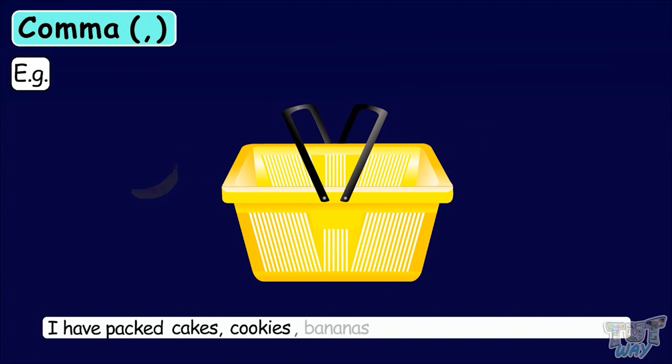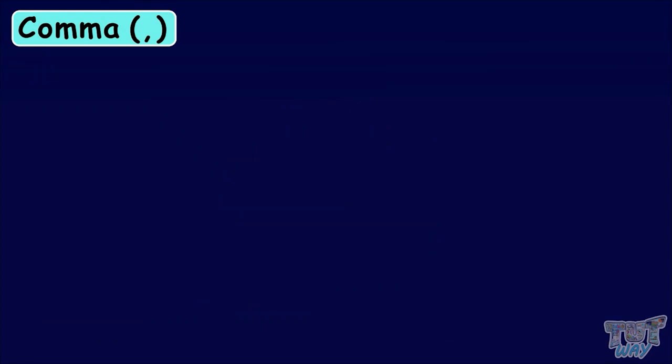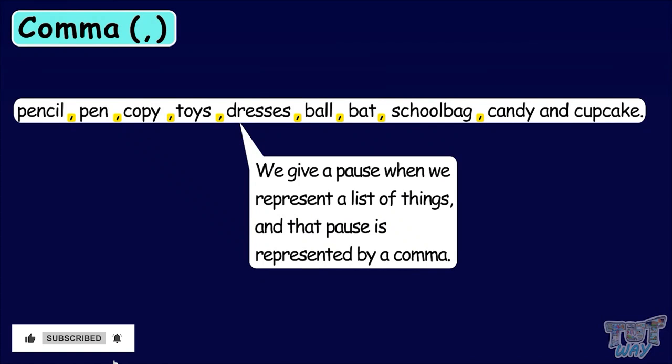This is a sentence with breaks in it like cakes, cookies, bananas. There are breaks between the naming words. These breaks or pauses are represented in writing with the help of commas. We give a pause when we represent a list of things and that pause is represented by a comma.